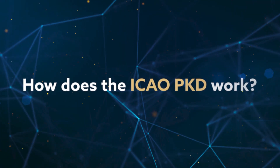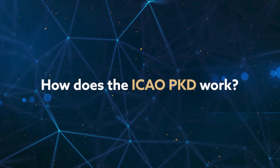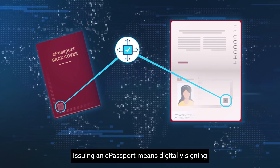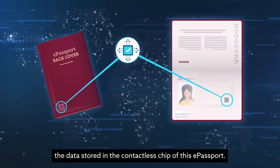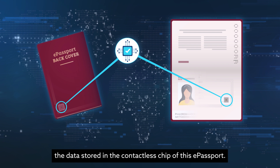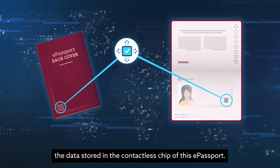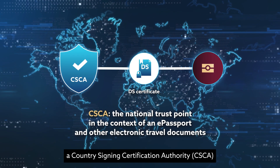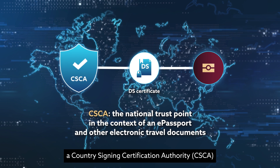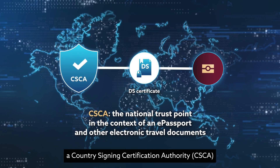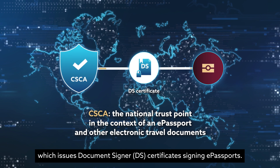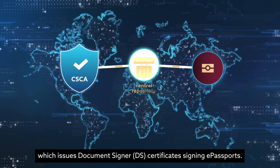How does the ICAO PKD work? Issuing an e-passport means digitally signing the data stored in the contactless chip of that e-passport. A country establishes for this purpose a Country Signing Certification Authority, which issues Document Signer certificates signing e-passports.